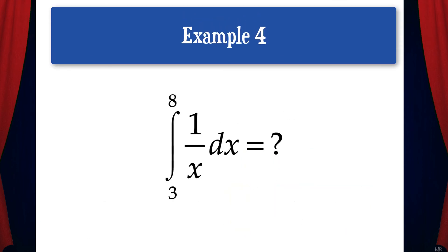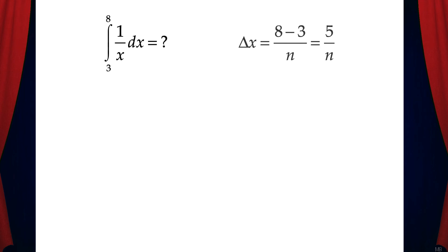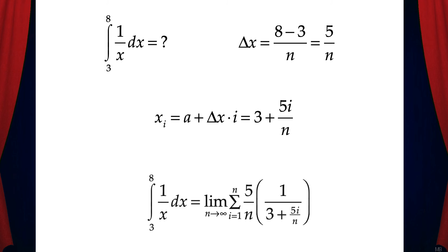Let's do one last example to make sure you truly understand this. Here we have the integral from 3 to 8 of 1 over x dx. Delta x is 8 minus 3 over n, which is 5 over n. Then x sub i is a plus delta x times i, giving us 3 plus 5i over n. The final answer: the integral from 3 to 8 of 1 over x dx equals the limit as n goes to infinity of the sum where i goes from 1 to n of 5 over n times 1 over 3 plus 5i over n. Here 5 over n is delta x and 1 over 3 plus 5i over n is f of x sub i.